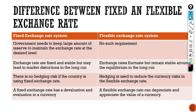Under the fixed exchange rate system, exchange rates are fixed and stable but may lead to market distortion in the long run — it is very difficult to maintain a fixed and stable exchange rate over the long term. However, under the flexible exchange rate system, the exchange rate fluctuates but remains stable around the equilibrium in the long run.